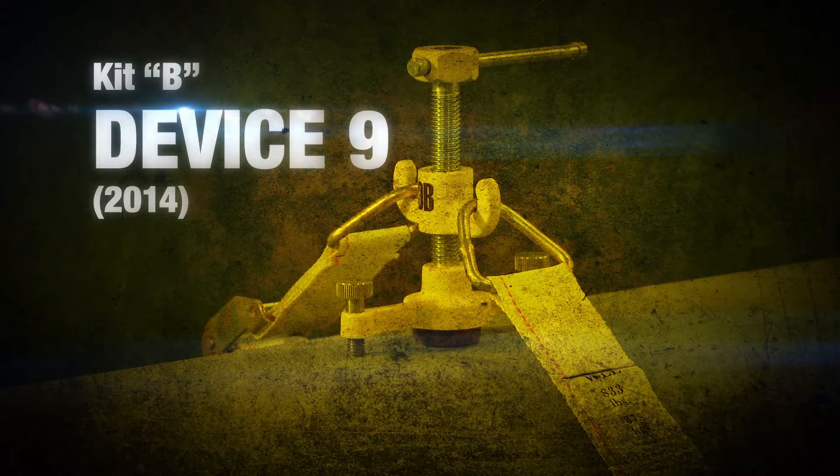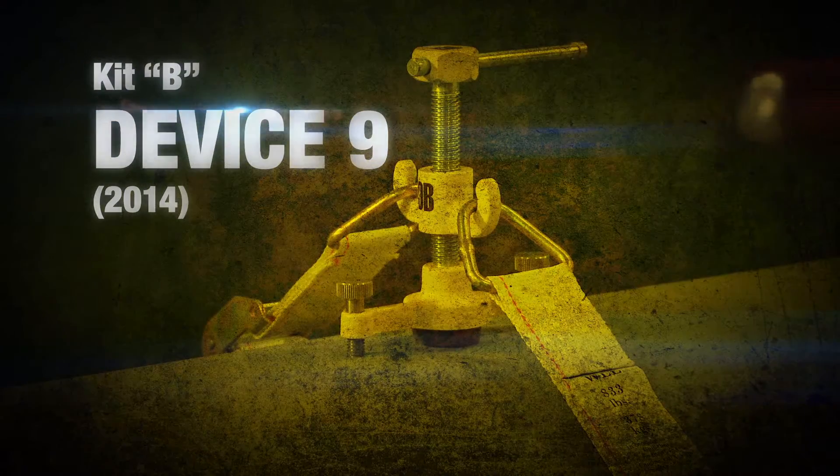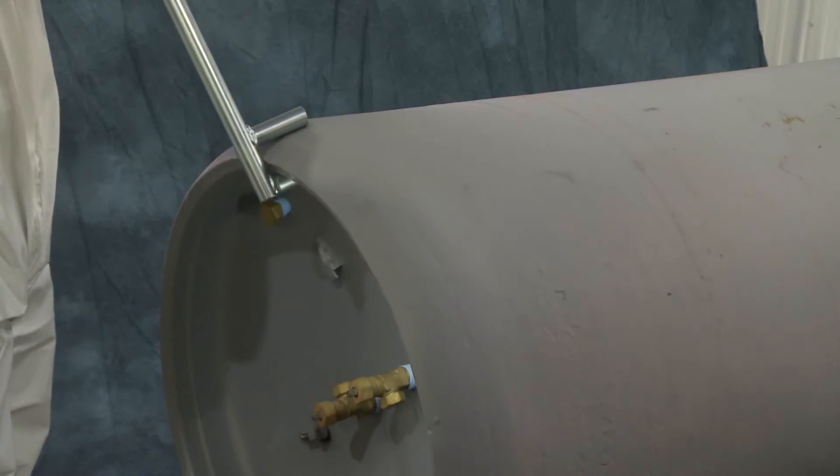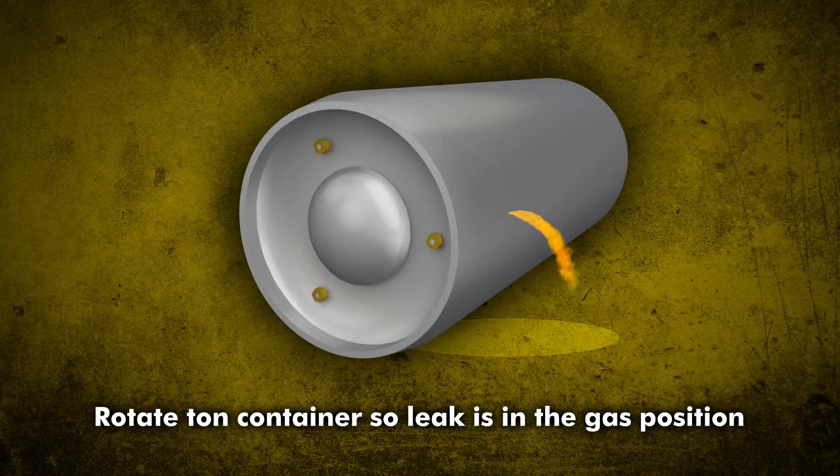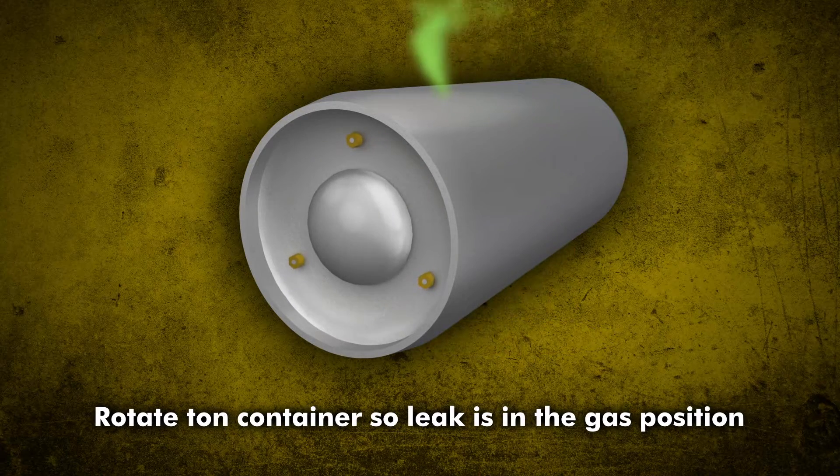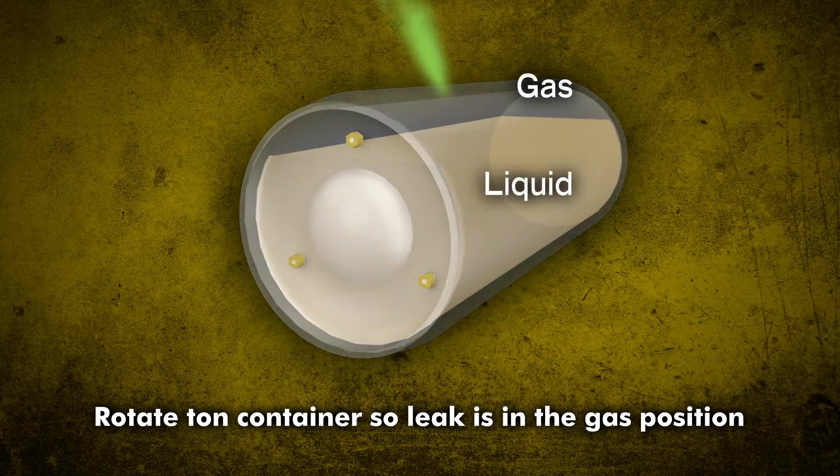A leak in the container sidewall can be contained by applying device 9. First, position the container on its side and rotate it until the leak is on the top. This results in a chlorine gas leak and not a liquid leak.